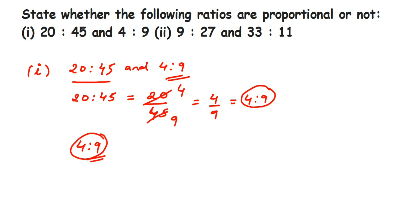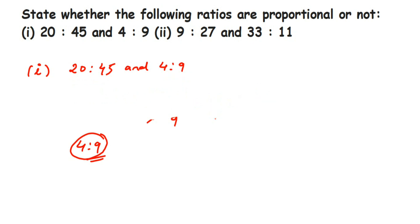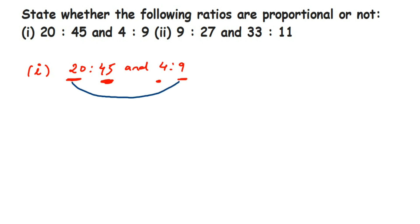The other method — the textbook method — is to check the product of extremes and the product of means. Extremes are the numbers at the corners: here 20 and 9 are the extremes. The means are the numbers on the inside: 45 and 4 are the means. You find the product of the extremes (20 × 9) and the product of the means (45 × 4). If they are equal, the ratios are proportional; if not, they are not proportional.